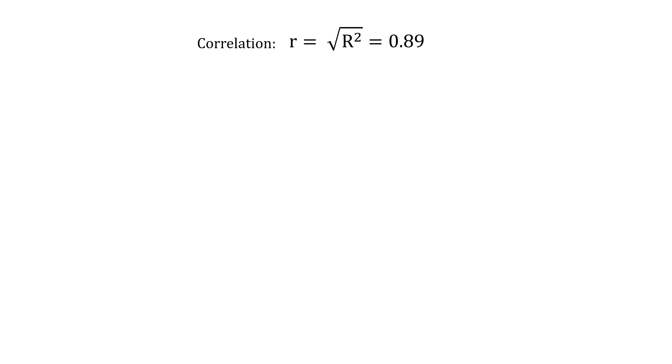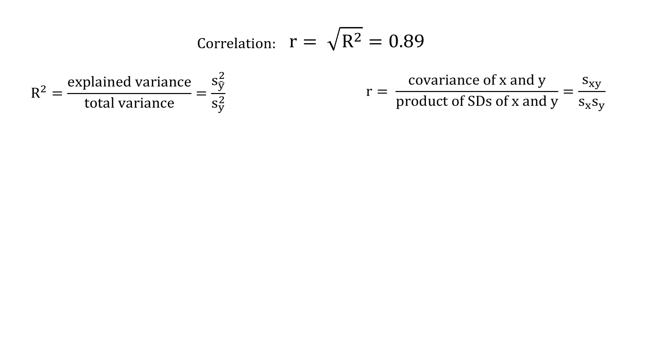r squared is the ratio of explained variance to total variance, s y hat squared divided by s y squared. In case you don't know, the hat indicates that these y are predicted by a model, as we saw earlier when discussing the different types of variances. Pearson's r has many definitions, but the most prominent is that it equals the covariance of both variables divided by the product of their standard deviations. So, to show that r squared is indeed Pearson's r squared, we need to show that the definitions are equal except for the square.